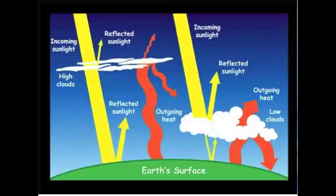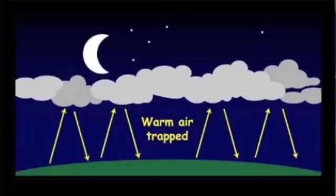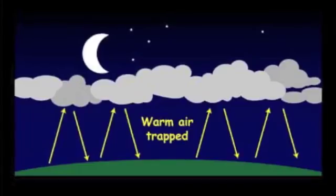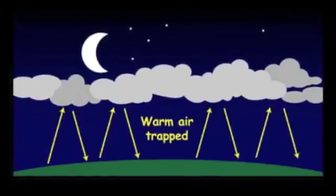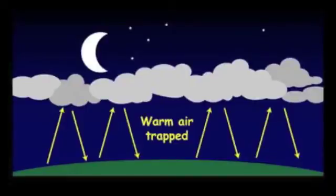Cooler clouds reduce the amount of heat that radiates into space by absorbing the heat radiating from the surface and re-radiating some of it back down. The process traps heat like a blanket and slows the rate at which the surface can cool by radiation.